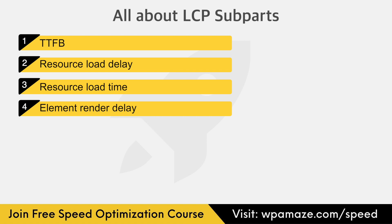Now let's look at the optimal time for the subparts. LCP subparts' optimal time is divided by percentage. The optimal time to first byte (TTFB) should be 40% of the overall LCP time. The optimal LCP time is 2.5 seconds, equal to 2,500 milliseconds, so 40% equals one second. Resource load delay should be less than 10% of the overall LCP time — less than 250 milliseconds. The optimal time for the resource to load should be 40% of the overall LCP time, that is one second.